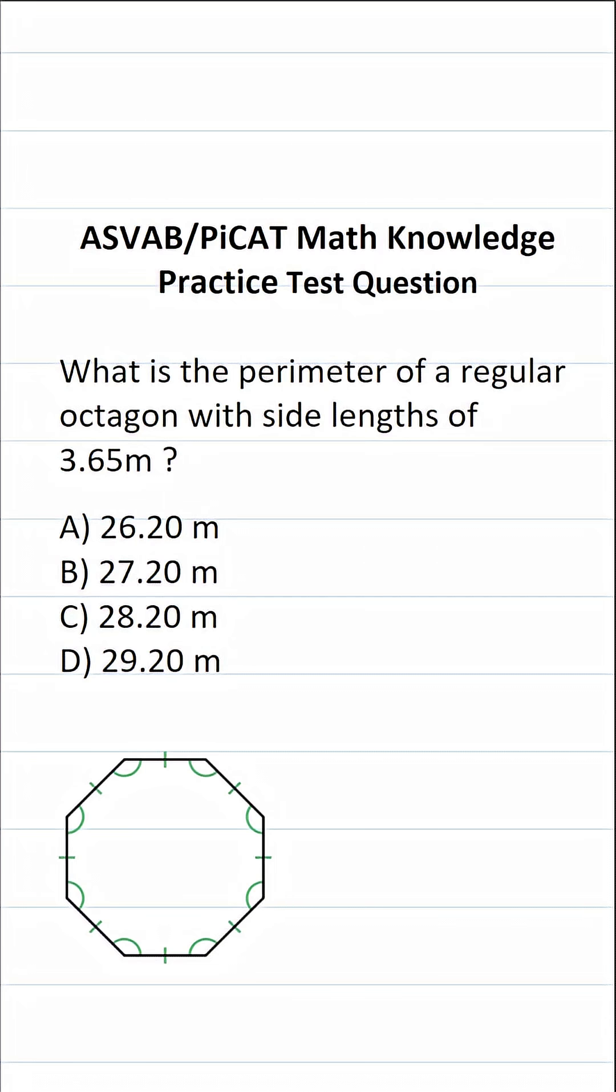This math knowledge practice test question for the ASVAB and PiCAT says, what is the perimeter of a regular octagon with side lengths of 3.65 meters?